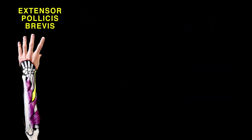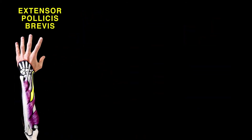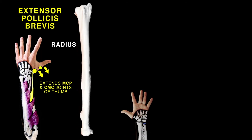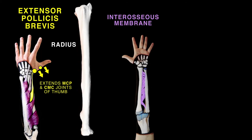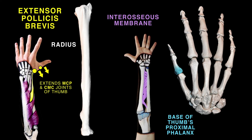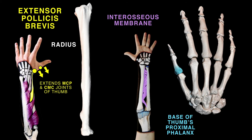The extensor pollicis brevis originates from the posterior surface of the radius and interosseous membrane, and attaches to the base of the thumb's proximal phalanx. It extends the thumb's metacarpophalangeal and carpometacarpal joints.